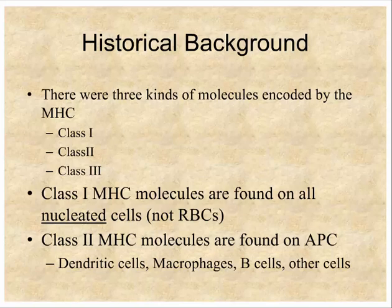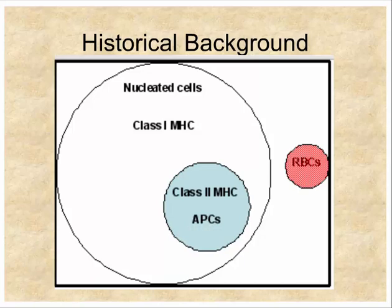Class 1 MHC molecules are found on all nucleated cells in humans — the only cells that lack them are red blood cells. In other species, red blood cells can also express these antigens, but in humans it's only nucleated cells. In contrast, class 2 MHC molecules are found only on the subpopulation of cells that act as antigen-presenting cells, including dendritic cells, macrophages, B cells, and thymic epithelial cells.